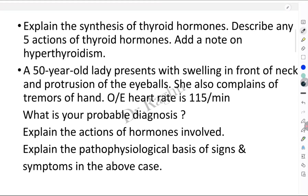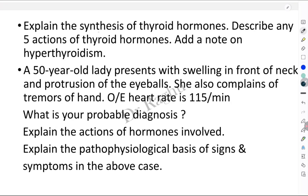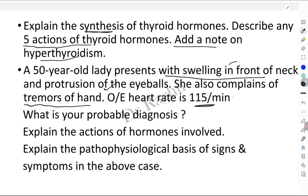In this video, let's understand hyperthyroidism and how this question can be asked. It can be part of a long essay — for example, explaining the synthesis of thyroid hormones, describing five actions of the thyroid hormones, and adding a note on hyperthyroidism. Or a clinical case: a 50-year-old lady with swelling in the front of her neck (goiter), protrusion of the eyeballs (exophthalmos), tremors of the hand, and a heart rate of 115 per minute (tachycardia) — all suggesting hyperthyroidism. Or it can be just a short note on hyperthyroidism.